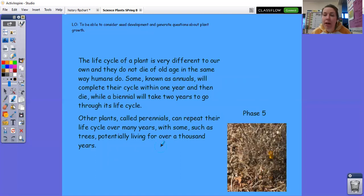And then finally, the plant life cycle is really different from a human life cycle. You know, they don't die of old age in the same way that humans do. Like some annuals, so flowers that only grow for a year, complete the cycle within the one year and then pass away. Whilst biennial flowers or plants will take two years to go through a cycle. But some plants called perennials can repeat the life cycle over many, many years with some, such as trees, potentially living for over a thousand years. How amazing is that? So from a little tiny seed, that seed lasts for well over a thousand years. It is amazing.